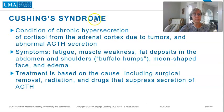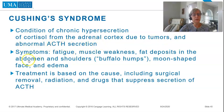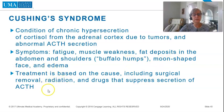Cushing's syndrome is a condition of chronic hypersecretion of cortisol from the adrenal cortex due to tumors and abnormal ACTH secretion. Symptoms include fatigue, muscle weakness, fat deposits in the abdomen and shoulders known as buffalo humps, moon-shaped face, and edema. Treatment is based on the cause, including surgical removal, radiation, and drugs that suppress secretion of ACTH.